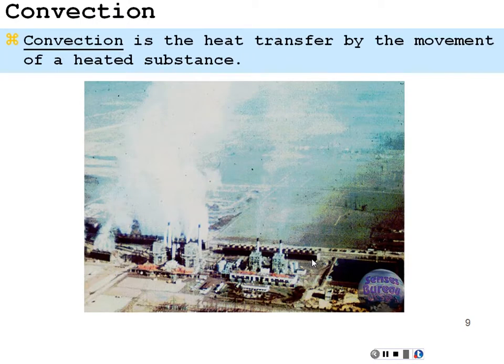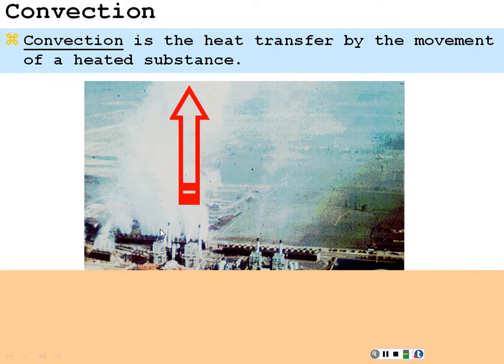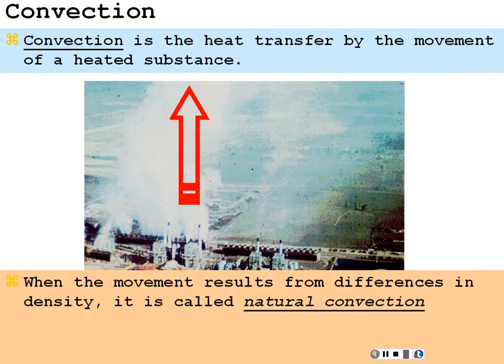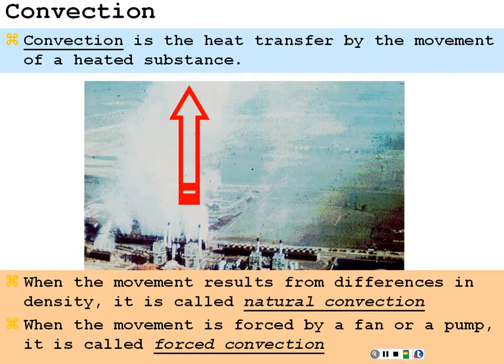We can also have a heat transfer by the actual movement of the heated substance. This is called convection. So in these smokestacks, where the actual smoke is traveling as the heated substance from point A to point B, then that is convection. When the movement actually results from the differences in density of the gas, it's called natural convection. And when the movement is forced by a fan or a pump, it's called forced convection.